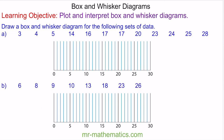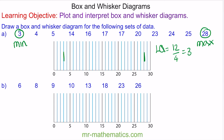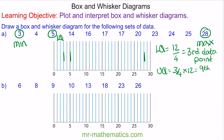Now we're going to create a box and whisker diagram from a data sample. The minimum is at 3 and the maximum is at 28, so we can show these on our scale. To work out the lower quartile, the sample size is 12, so we divide by 4 to get our third data point, which is 5. The upper quartile is three-quarters of 12, so our ninth data point, which is 23. We'll create our box and whiskers, and the median will be the sixth data point, so 17.